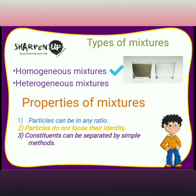The first is homogeneous mixture and the second is heterogeneous mixture. A homogeneous mixture is one in which the constituents are uniformly distributed and each part of the mixture has the same property. For example, salt dissolves in water to form a homogeneous mixture. Particles of soil and water are also uniformly distributed.